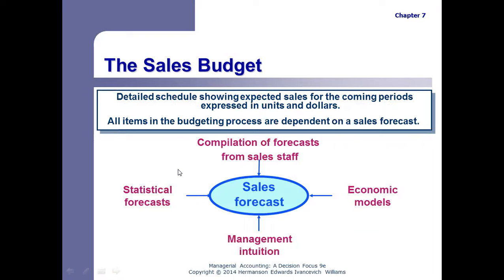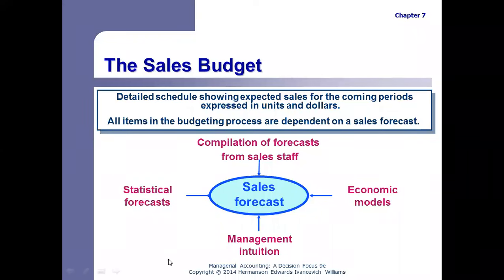The first budget, or the first step in the budgeting process, is the sales budget. We have to do the sales budget first because in order to budget how much we're going to spend, we first have to know how much we have available to be spent. That's what the sales budget is all about — how much are we going to sell in the budgeting period that we're looking at?